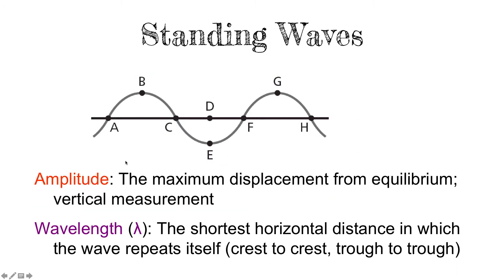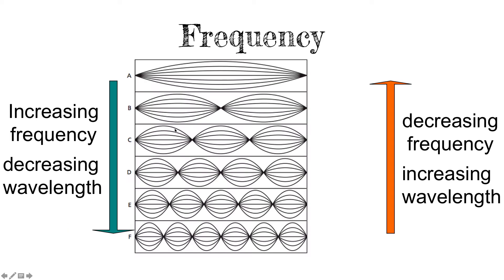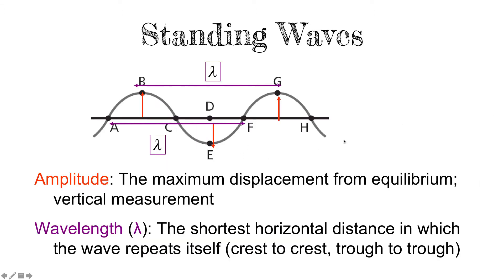The amplitude is the distance from the line of equilibrium to the highest point or to the lowest point — it's the maximum displacement, the distance from a node to an antinode vertically. A wavelength is the shortest horizontal distance in which the wave repeats itself. For example, from crest to crest would be one wavelength, or from one node, skipping a node, to the next node — that is one wavelength. It could also be measured from trough to trough.